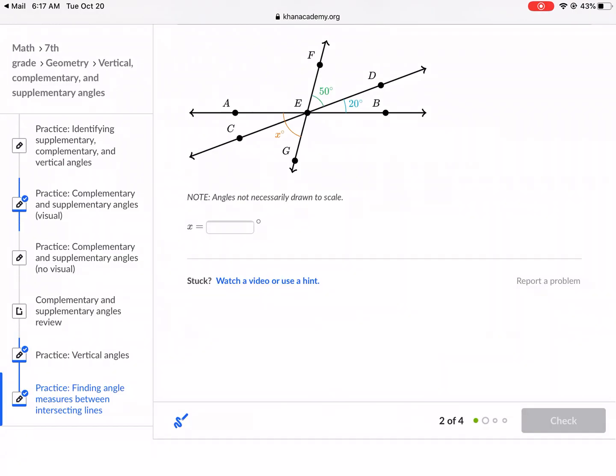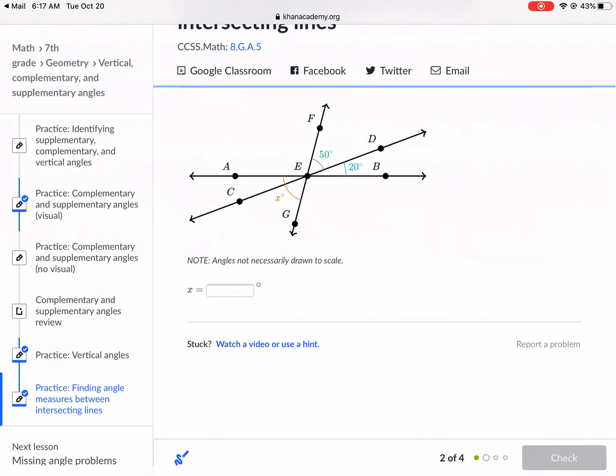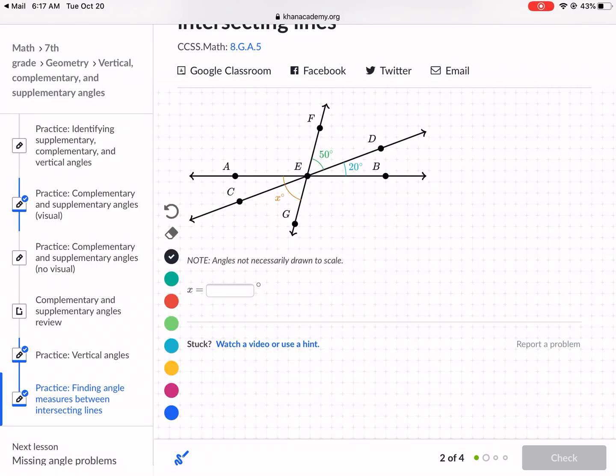All right, next question. Now we have a little bit more going on this time, which is kind of good. But if we look here, we see 50 and 20. And then we see x on the other side. Now, this is a special case called vertical angles.